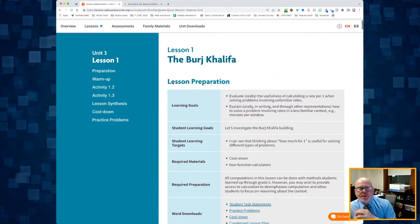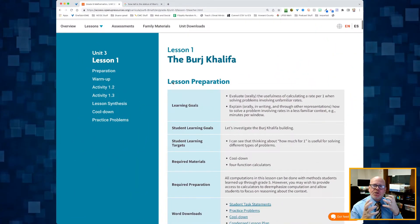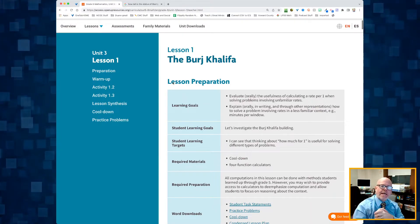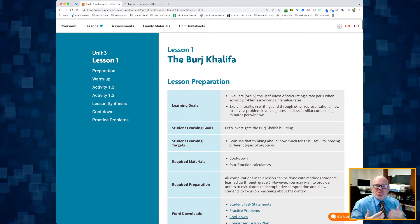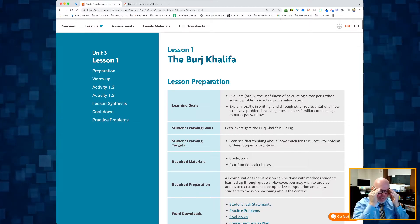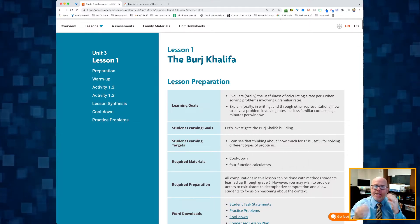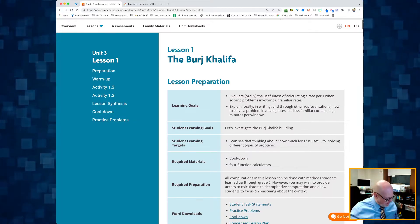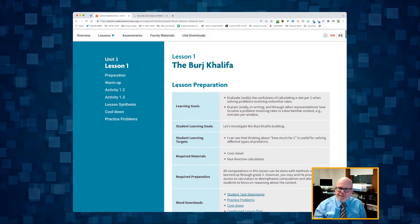All right, this is sixth grade, unit three, lesson one. In this lesson, we are going to start digging into unit rates, and we're going to use a building called the Burj Khalifa as our context for informally digging into unit rates. Let's just get started on this.